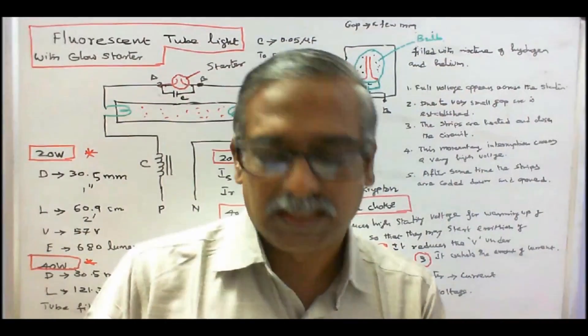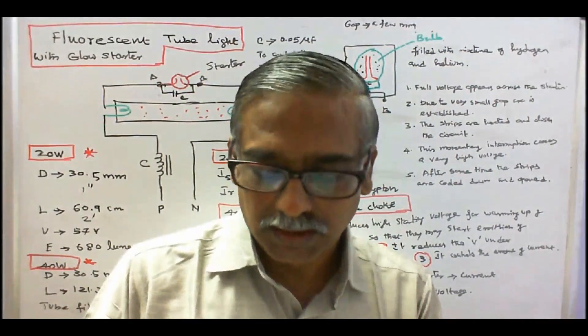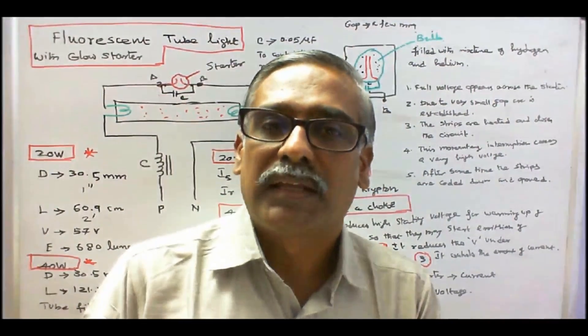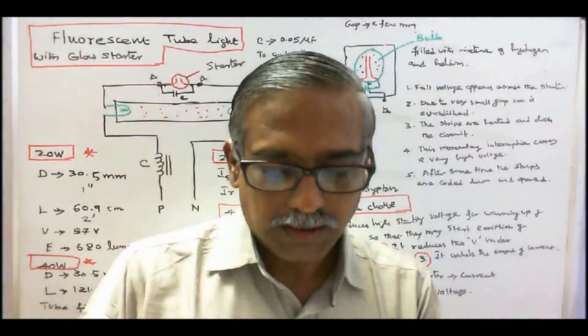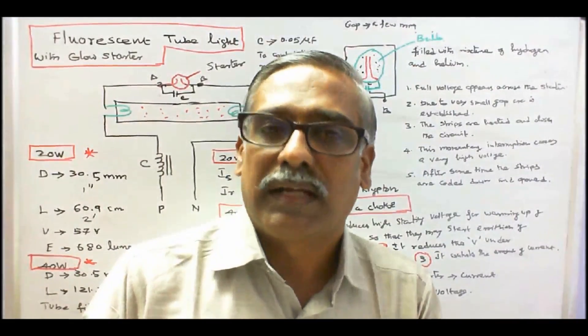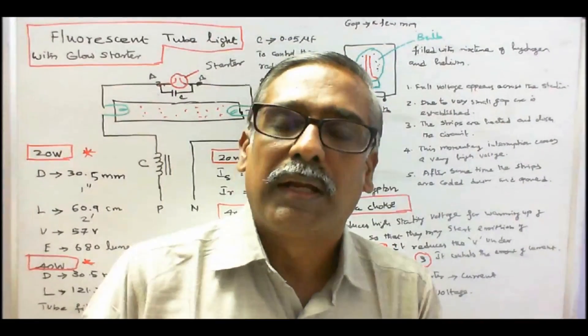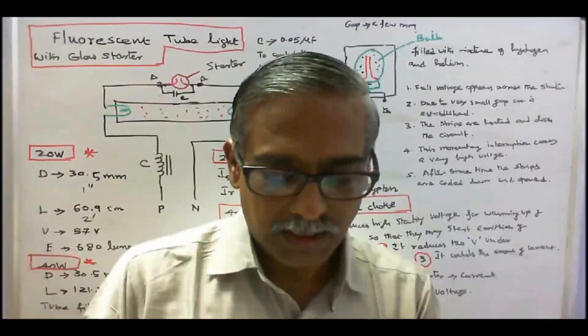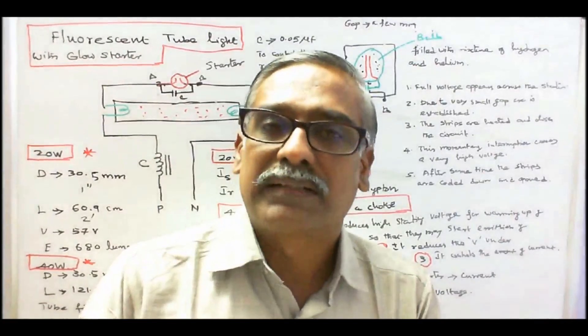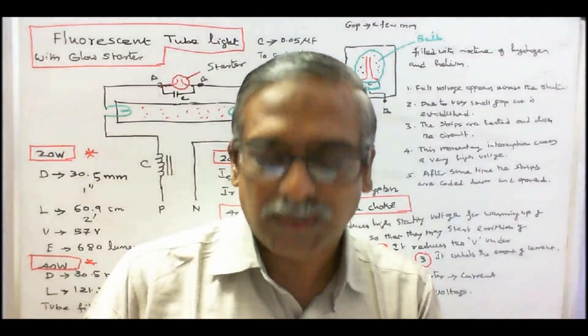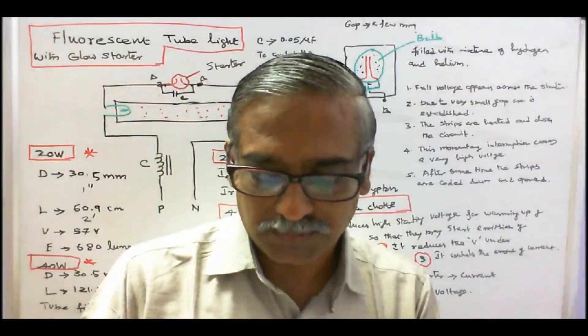Fluorescent materials. Number 1. Zinc silicate. Its color is green. Its wavelength is 5200. Number 2. Calcium tungstate. Its color is blue. Its wavelength is 4600. Number 3. Magnesium tungstate. Its color is blue-white. Its wavelength is 4800.